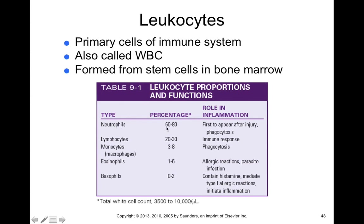Normally, 60–80% of white blood cells are neutrophils, 20–30% are lymphocytes (including B cells, T cells, and natural killer cells), 3–8% are monocytes (which include macrophages), 1–6% are eosinophils, and 0–2% are basophils, making basophils the least abundant.